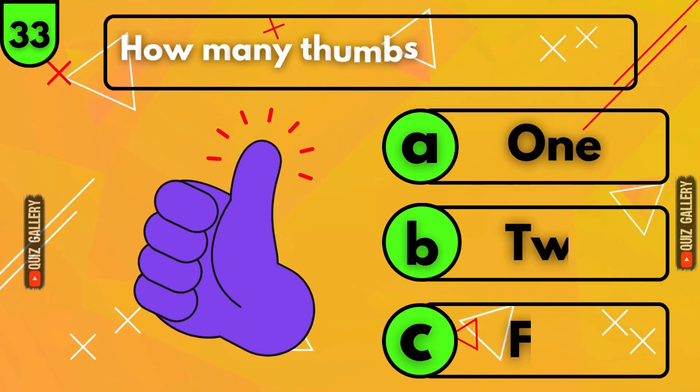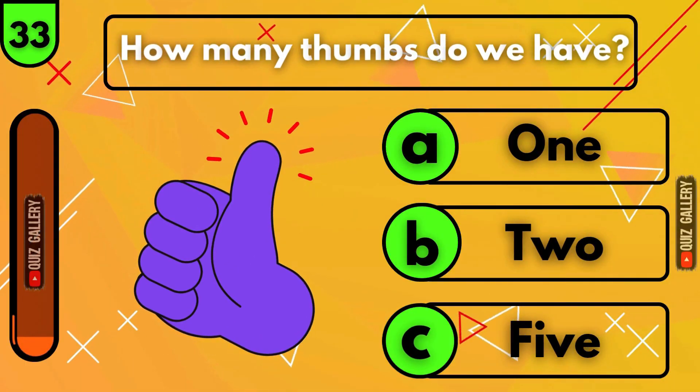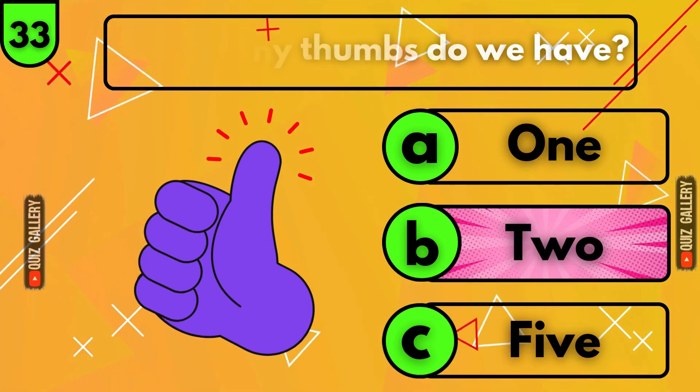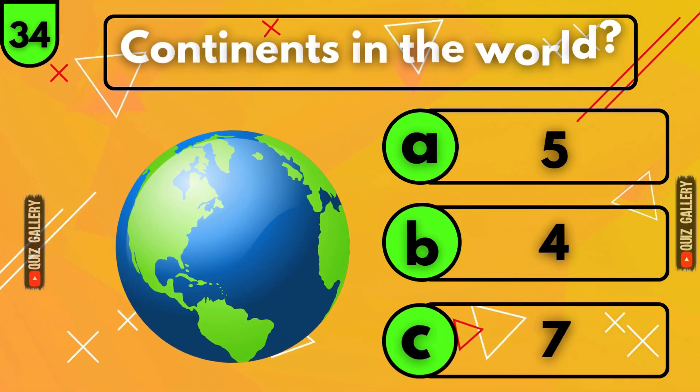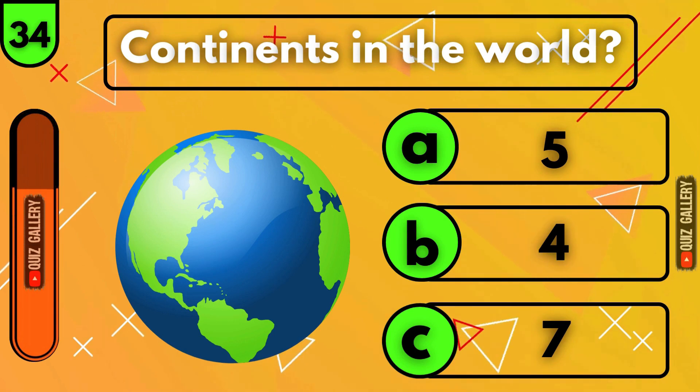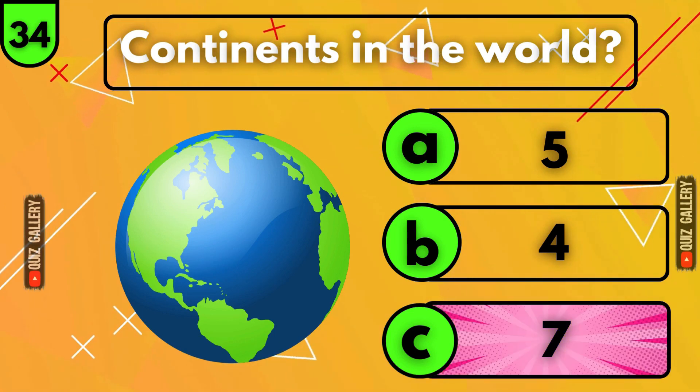How many thumbs do we have? 2 thumbs! How many continents are there in the world? 7 continents!